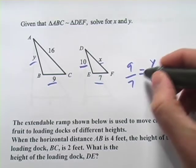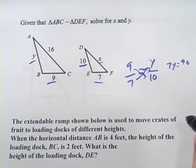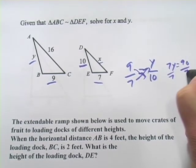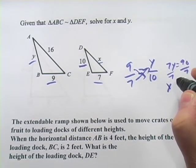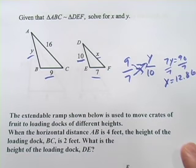Then you would get when you cross multiply here you would get 7Y equals 90 and you divide 90 by 7 and I think you would get Y equals 12.86. So we've solved for Y.